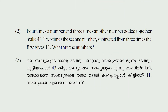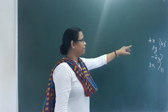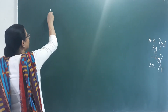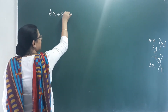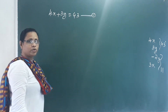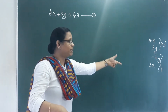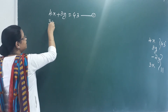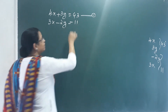Next question: Four times a number and three times another number added together makes 43. Two times the second number subtracted from three times the first gives 11. What are the numbers? Let the first number be x and the second be y. We get equation 1: 4x plus 3y equals 43, and equation 2: 3x minus 2y equals 11.